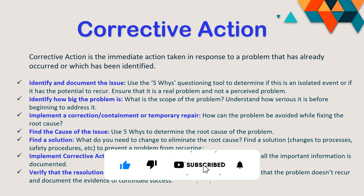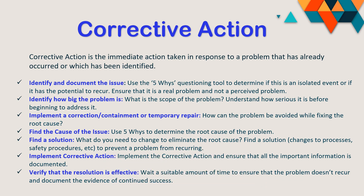Once we understand the scope of the problem, we can correlate that to the impact. Next, once we identify the issue and its scope, we need to implement the corrective action or a containment action. Sometimes it is not possible to fully correct the issue, but we have to contain it, or temporarily repair it. We then ask how this problem can be avoided while fixing the root cause — we need to find the root cause and understand why this problem occurred in the first place.